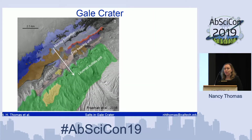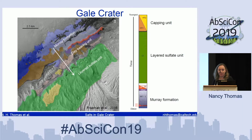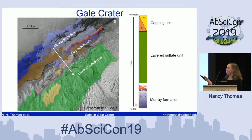Zooming into that white box, work by Fraeman et al. and others has shown that from the base of the mound — where MSL's traverse started — to the top, we transition from clay-rich materials to sulfate-rich materials, potentially capturing that transition to a more arid climate. This can be studied in depth in situ. Here, the Fraeman et al. stratigraphic column shows a transition from the lowest layers, the Murray formation clay-rich materials, to more sulfate-rich materials not yet reached by the rover.